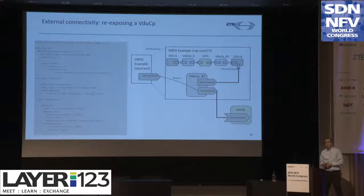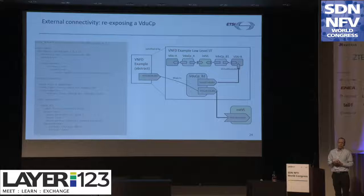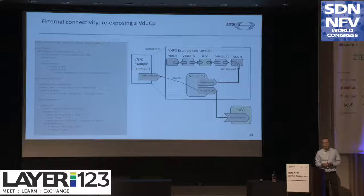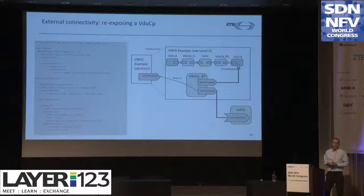We also want to have external connectivity in the VNF — you want to have the possibility to connect your VNF to the external world. In the NFV model, this is always done with a class called the VNF external connection point, which in our VNF node is represented by the requirement 'virtual link'. The NFV model foresees that this VNF external connection point can be realized in two possible ways. What I'm showing here is one: when the VDU connection point for the virtual link, instead of connecting to an internal link, is directly connected to an external virtual link. That's what we mean by re-exposing the VDU CP.